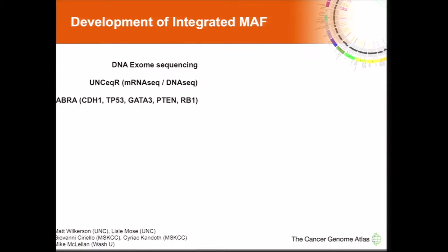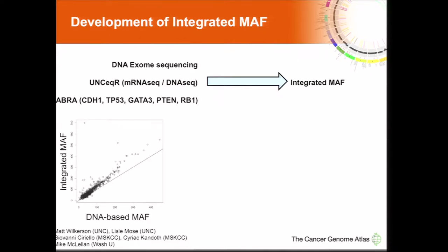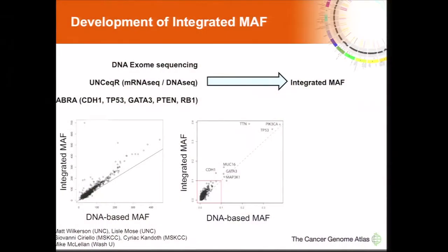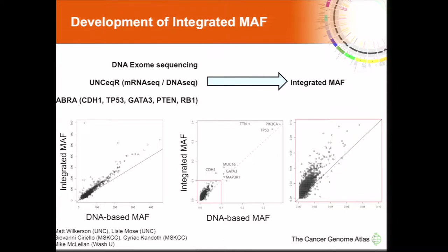On top of that, we used a program called Abra, developed by Lyle Mose — who has a poster this afternoon on this — which allows us to detect variants in small and medium-sized indels. Combining these three approaches, we developed an integrated MAF. Comparing the integrated MAF variant calls against the DNA MAF on a sample-by-sample basis, there's a uniform increase in variant calls in the integrated MAF. On a gene-by-gene basis, genes mutated at higher frequency like PIK3CA and P53 show increased calls, and even genes mutated at low frequency also show an increase.